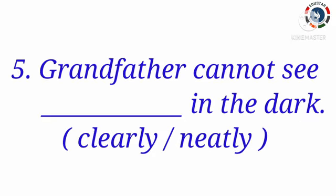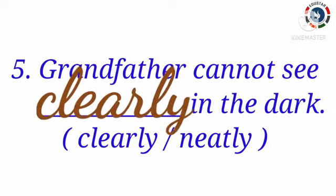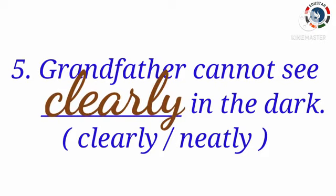Next question: Grandfather cannot see ___ in the dark. Options are clearly and neatly. Now tell me what is the correct answer. Yes, clearly. Because the word clearly tells us how the action happens — clearly describes the action word 'see'. So the correct answer is clearly. Grandfather cannot see clearly in the dark. I hope you all are clear about adverbs.